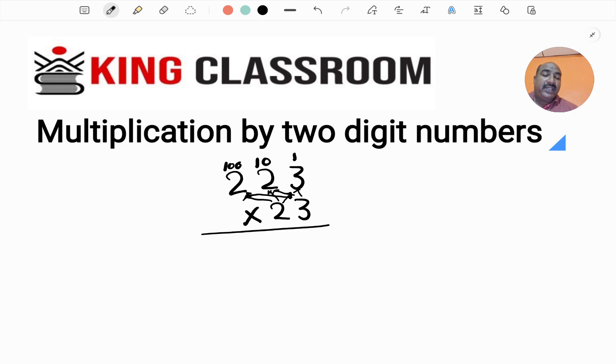First, multiply 3 from 1's place in 23 with 223. Three 3's are 9, three 2's are 6 in the 10's place, and three 2's are 6 in the 100's place. So the first result is 669.